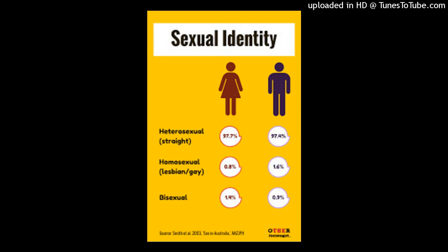To classify this continuum of heterosexuality and homosexuality, Kinsey created a six-point rating scale from exclusively heterosexual to homosexual in his work Sexual Behavior in the Human Male, 1948. Kinsey wrote: 'Males do not represent two distinct populations, heterosexual and homosexual. The living world is a continuum in each one of its aspects.'